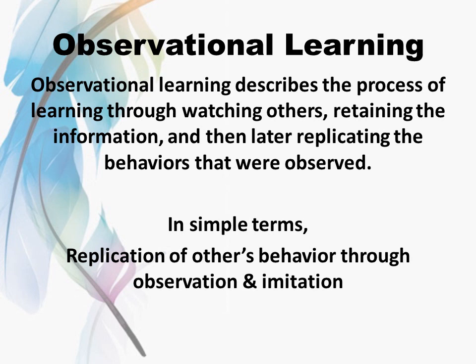Observational learning describes the process of learning through watching others, retaining the information, and then replicating the behaviors that were observed. First, we watch others; then we retain the information in our mind; then we replicate it — meaning imitating others or doing like them. In simple terms, the replication of others' behavior through observation and imitation is called observational learning.